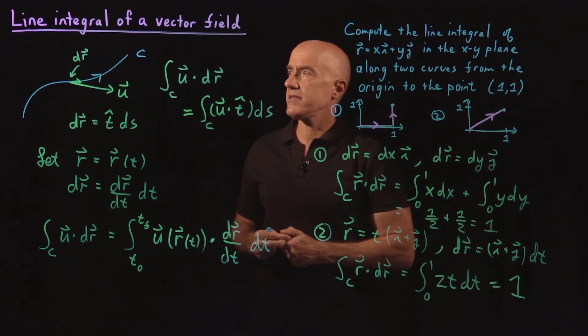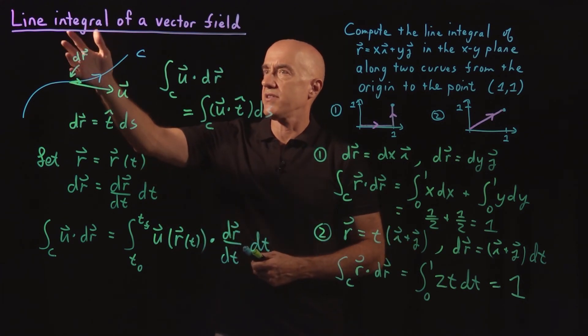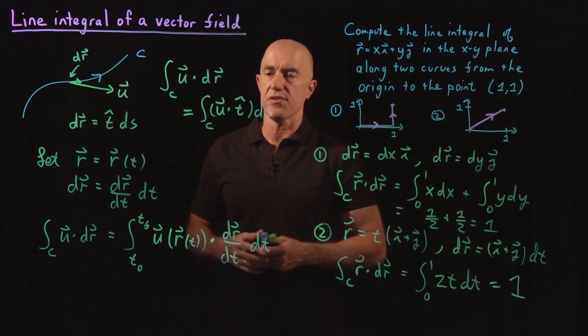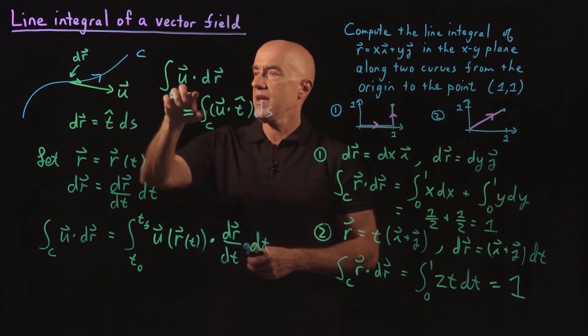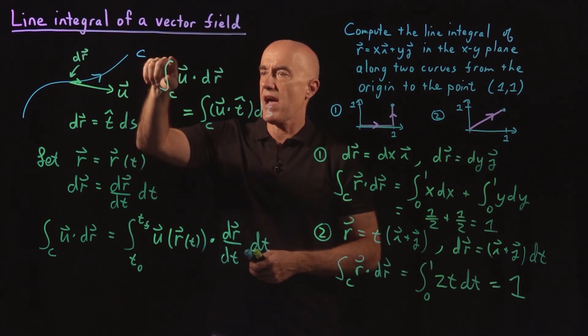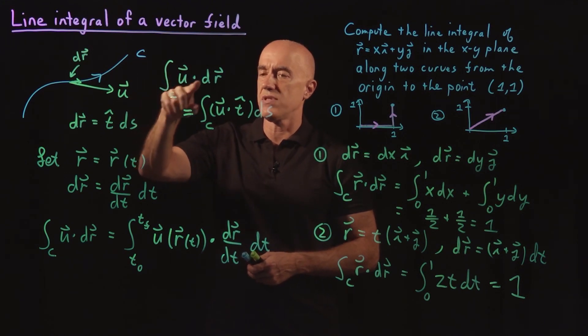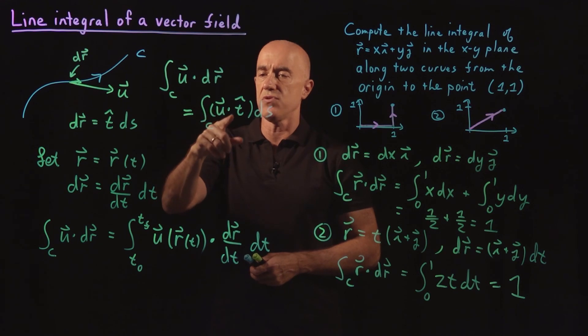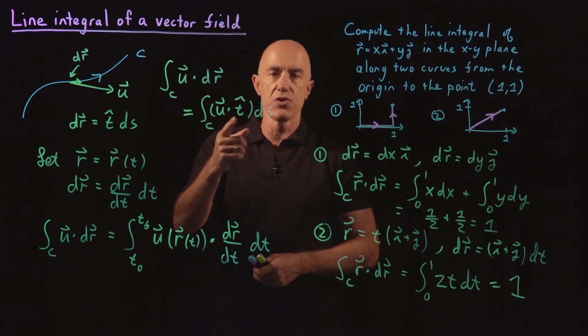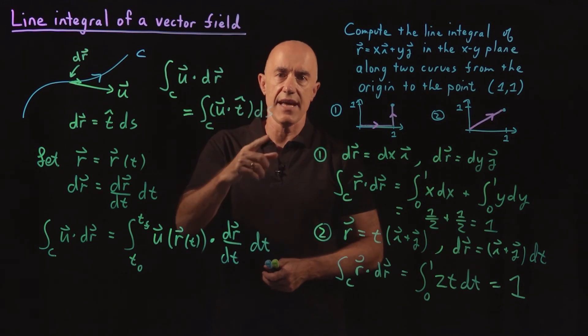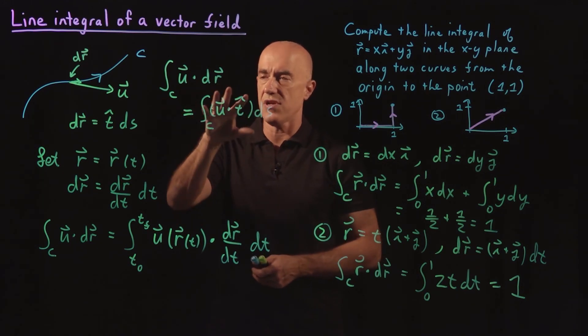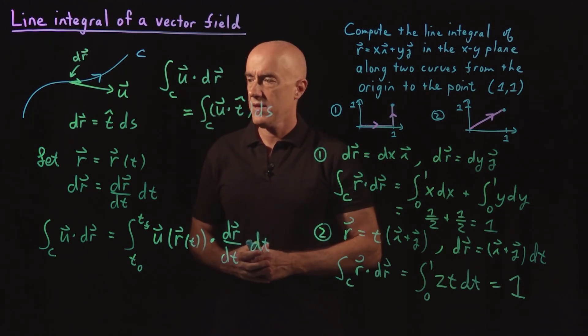So let me summarize. To define a line integral of a vector field, we can define it in terms of a line integral of a scalar field. When we write it as the integral along the curve U dot DR, what we mean is the integral along the curve of U dotted into the unit tangent vector of the curve times DS, which is the line integral of a scalar field.